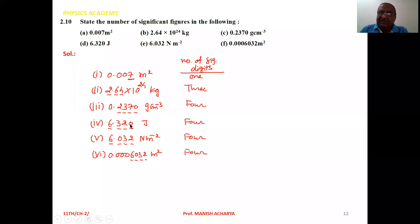Then 6.032 N/m². See, after decimal point this one is 0, but before decimal point there is non-zero digit. So your zero is between two non-zero. When your zero is between two non-zero, then that is significant irrespective of the position of the decimal point. So again here 4.